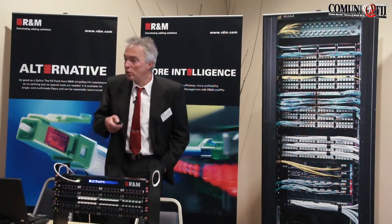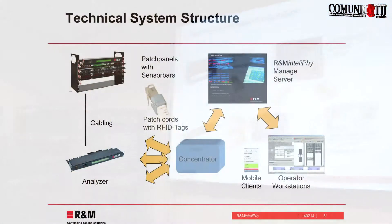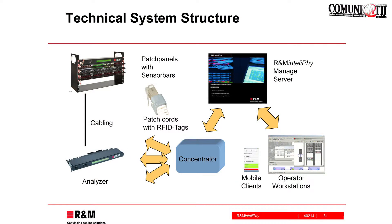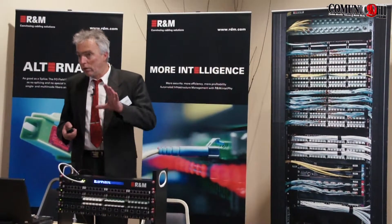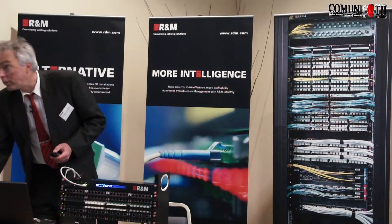Here is the complete system view — we have covered all of the components. Patch panels fitted with sensor bars, the cabling running to the analyzer. You can have many analyzers in an installation, typically one for every one, two, or three cabinets. There is a concentrator function — basically a PC which connects to all of the analyzers and has one single combined link to the server, informing the server about any changes in the network. Then we have graphical clients: a full-featured client for PC or Macintosh on reasonably large screens, and a small mobile client optimized for use on smartphones or tablets.